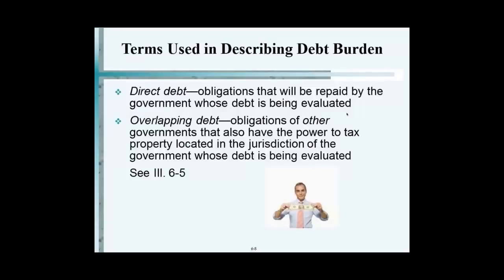These are the terms that we are going to be talking about. Overlapping debt. Overlapping debt is interesting because in New Jersey we have towns, we have counties, and then we have state. When the county of Essex or county of Morris goes out and borrows money, who pays for that? The taxpayers in each of the towns which are within the county. So not only do you have to worry about your town, you have to worry about your county. That county level is called the overlapping debt.